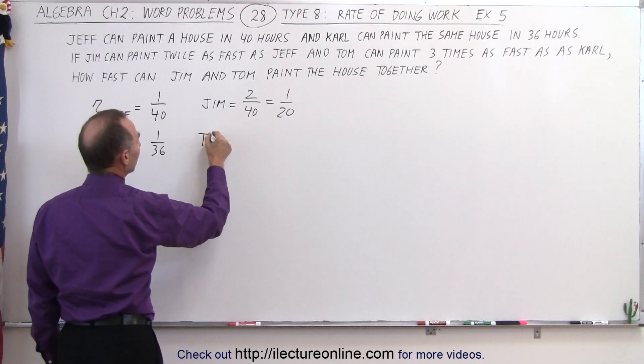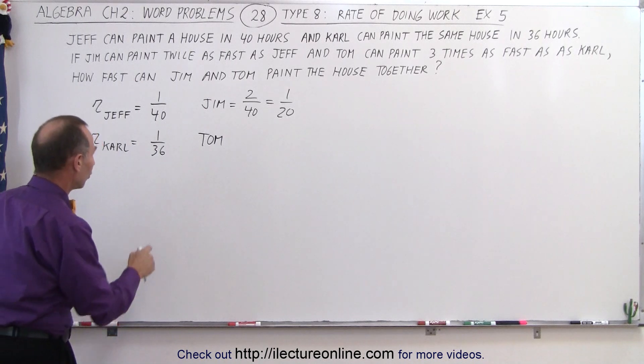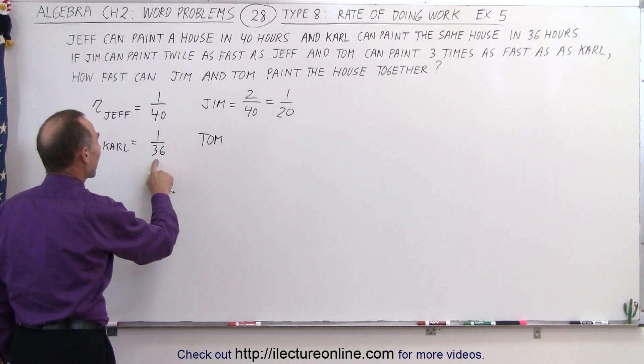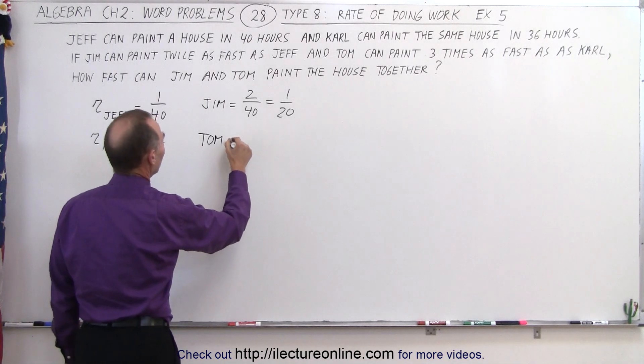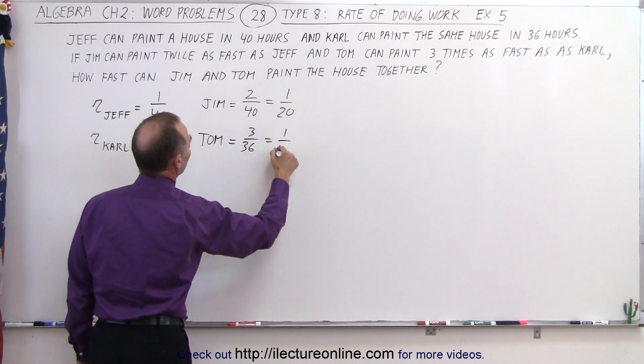And then we have Tom. Tom can paint three times as fast as Carl, so that means Tom will have three times the rate of Carl, so Tom's rate will be 3 over 36, which is 1 over 12.